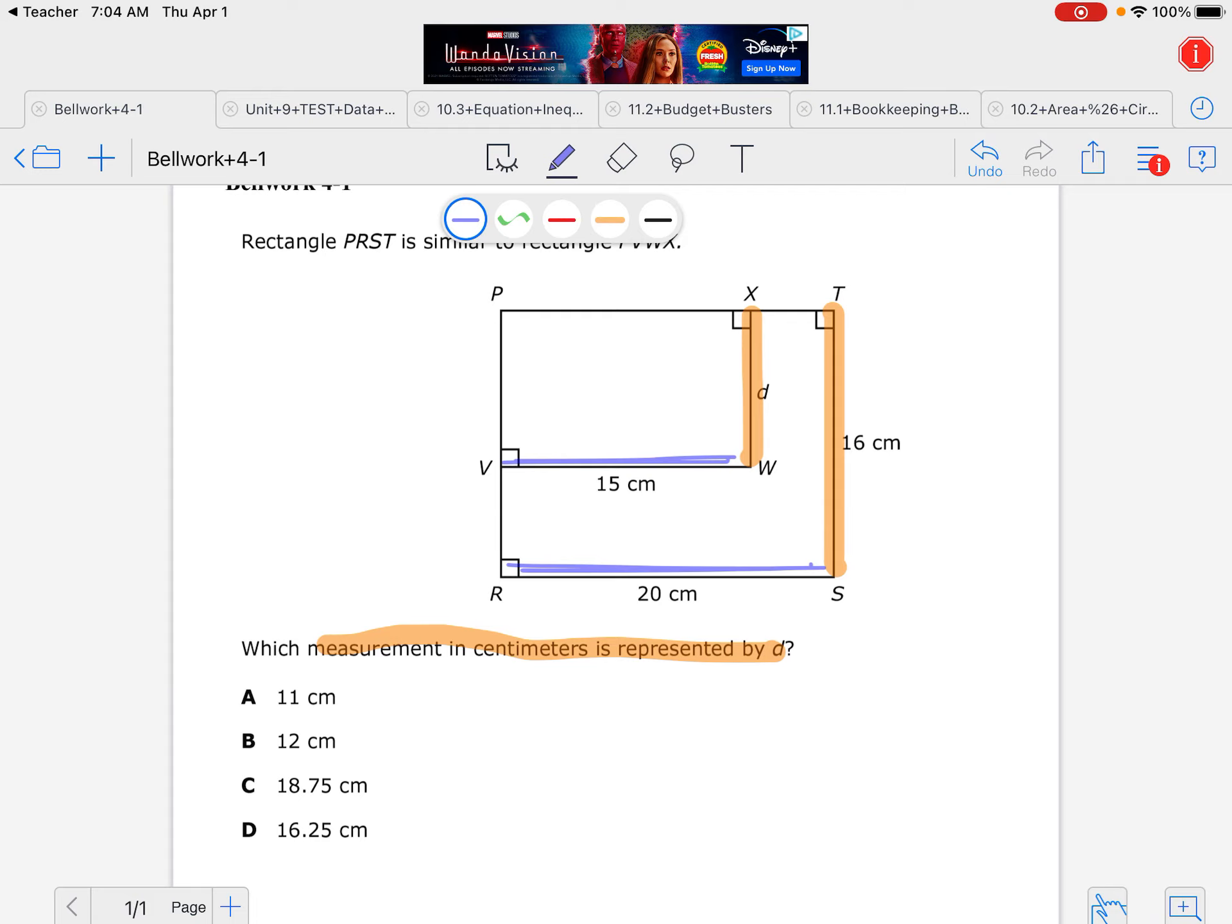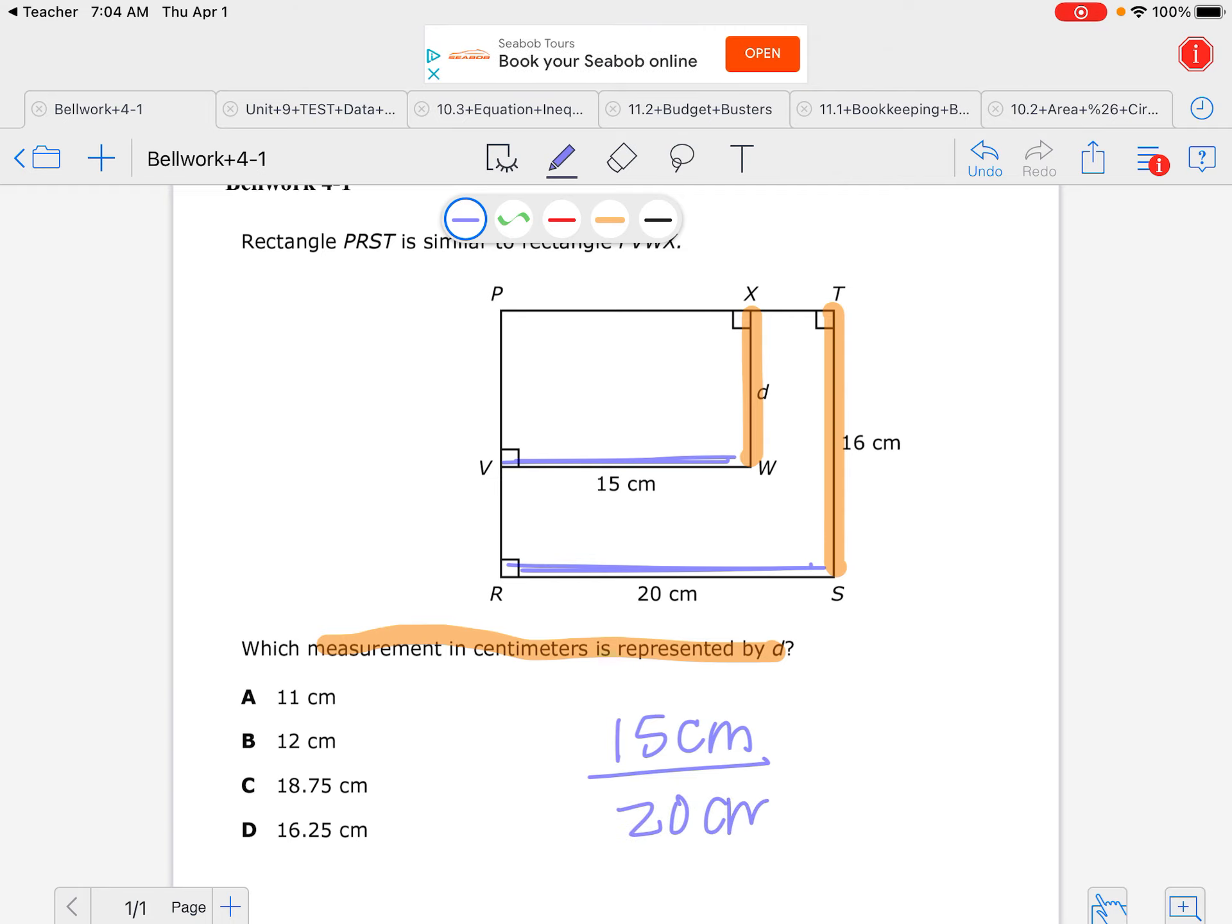So my purple number, 15 centimeters. I could put my other purple number, 20 centimeters, and then say it's equal to my two orange numbers. So 15 and D were in the same rectangle, so they're going to both go on the top for me. And then 20 and 16 are also part of the same rectangle, so I will put those on the same spot on the bottoms.